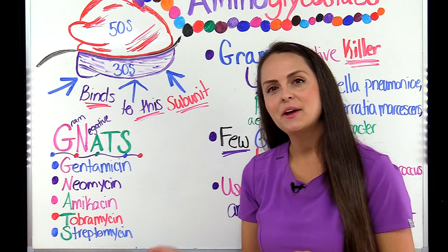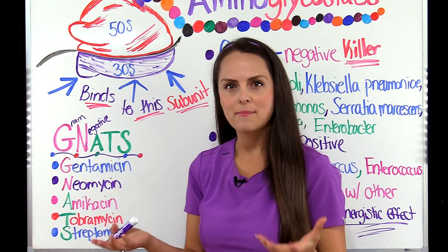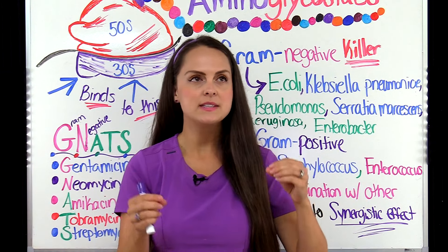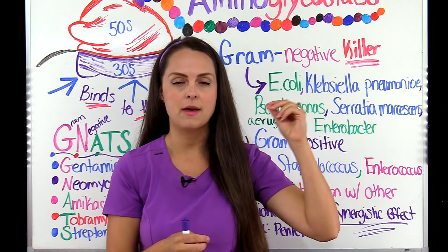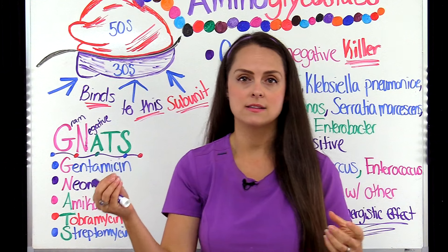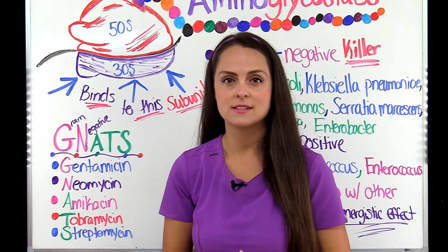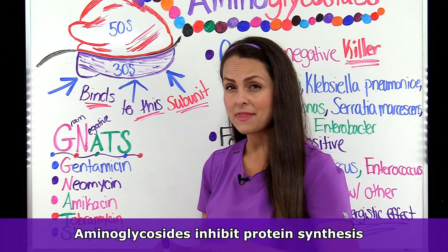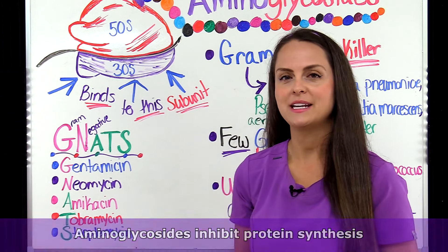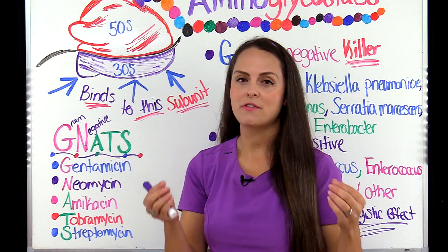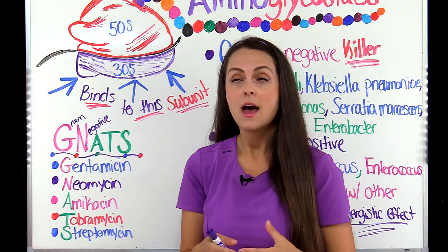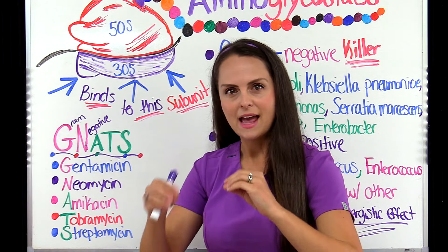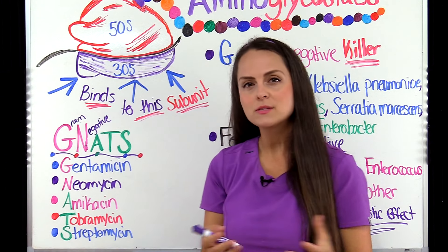Now let's talk about how aminoglycosides work and how they actually kill bacteria. Depending on the antibiotic group, they target certain parts of that bacteria cell — some inhibit cell wall synthesis, others inhibit nucleic acid synthesis, and some inhibit protein synthesis. Aminoglycosides inhibit protein synthesis inside that bacteria cell, so we don't get the creation of proteins. Proteins are really important for bacterial survival — they're the backbone of its ability to thrive. So if we stop that process, we can kill it.